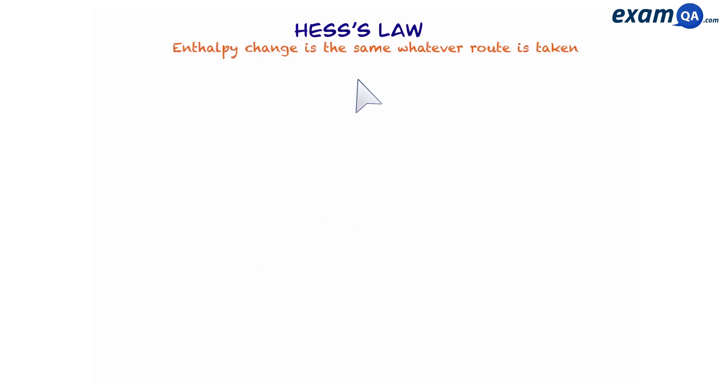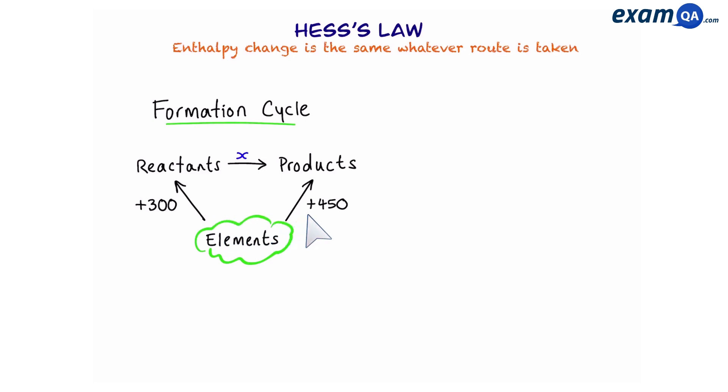Back to Hess's law. Now, we're going to talk about Hess's cycles. The first one is called a formation cycle. Our main reaction is at the top, and this is what we want to work out. In the formation cycle, we put elements at the bottom and point up to reactants and up to products. Let's say the value of the left arrow is 300 and the right arrow is 450. Since we know the value of the two arrows, we can add them together to give us the top arrow.